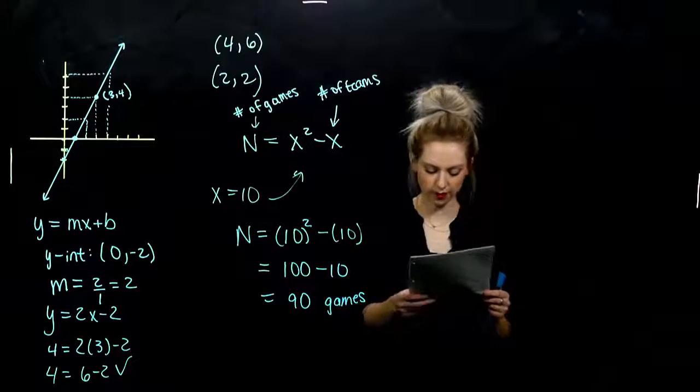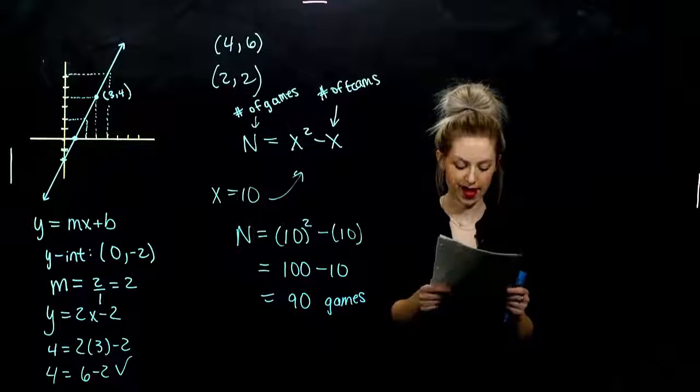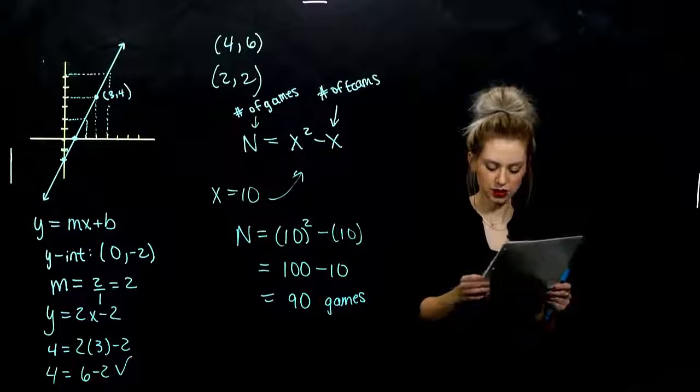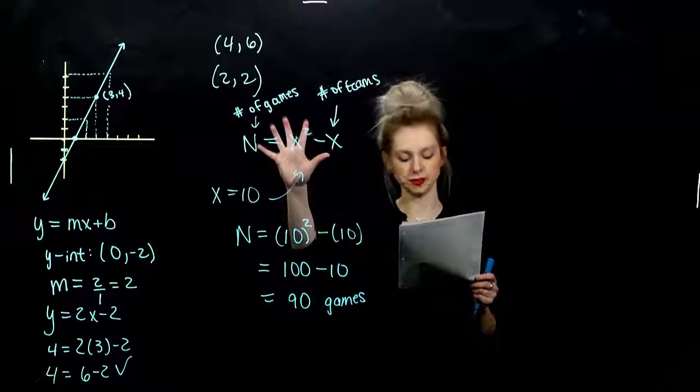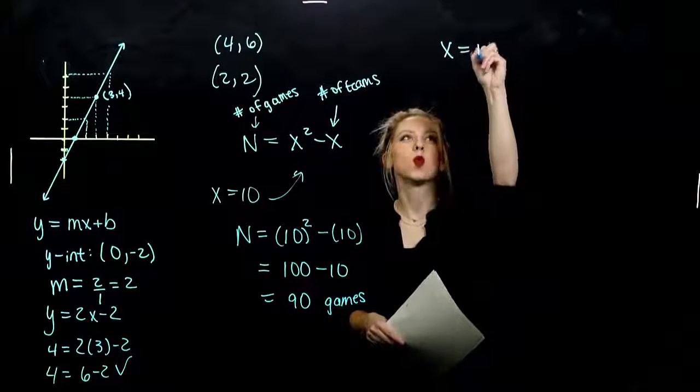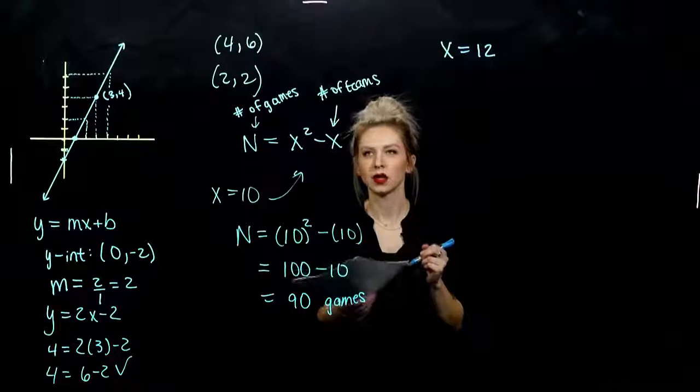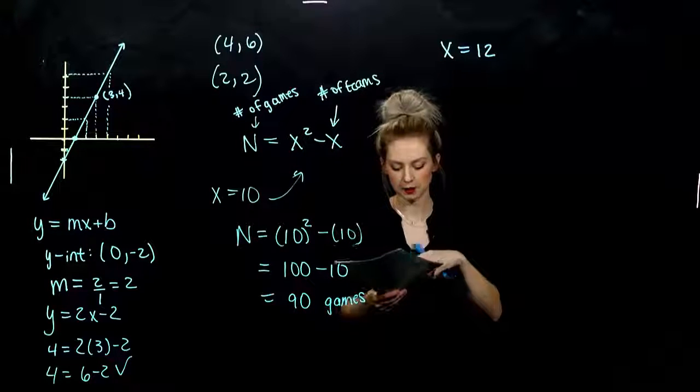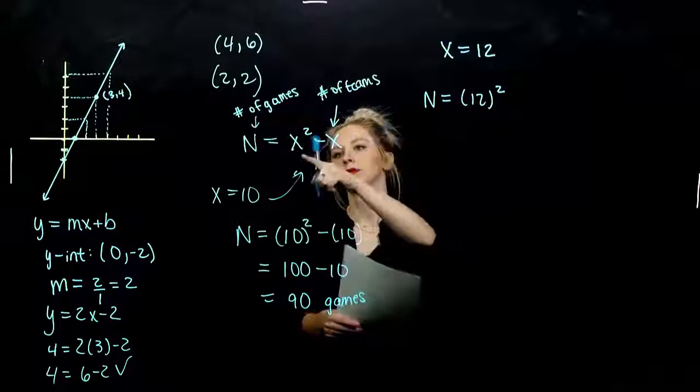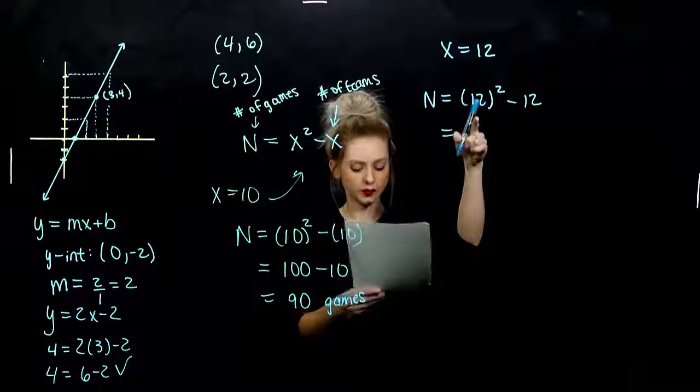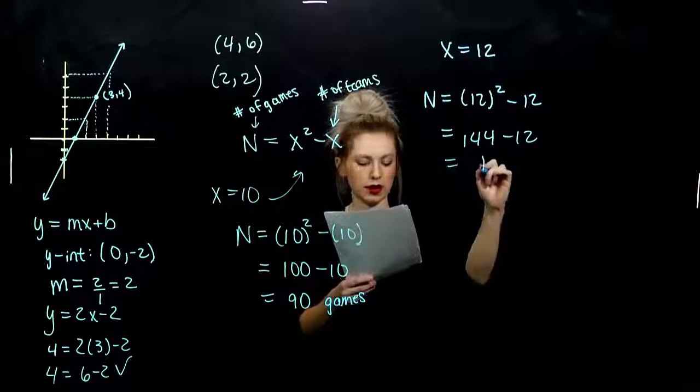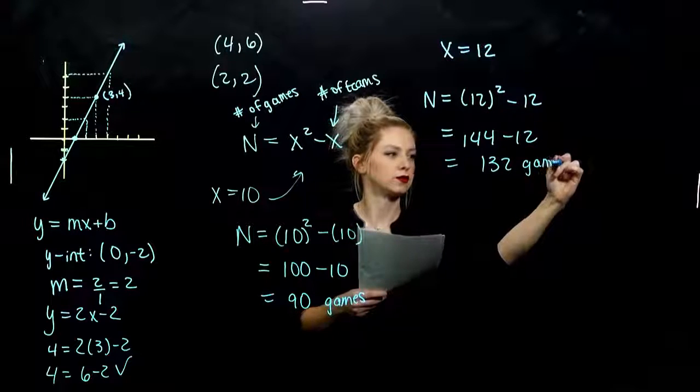Alright. So for you, determine the total number of games, n, to be played in a league of 12 teams in which each team plays every other team twice. So it still fits this model. Go ahead and evaluate. So what does that mean? x is equivalent to 12. That number of teams and how many games are going to be played. So n is going to be 12 squared minus 12. So 12 times 12 is 144. And if we take away 12, we're looking at 132 games to be played.